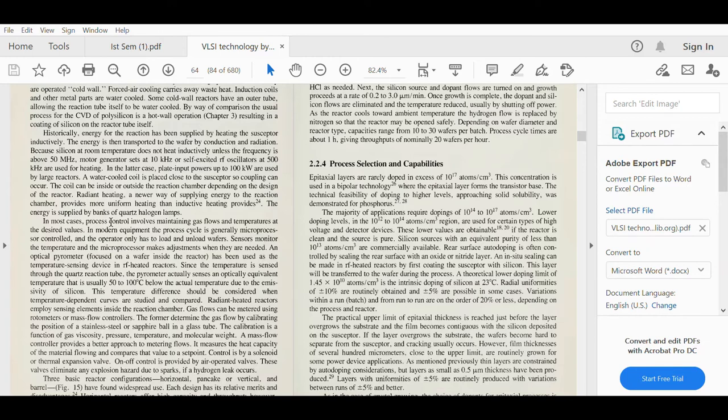In most cases, process control involves maintaining gas flows and temperature at desired values. In modern equipment, the process cycle is generally microprocessor controlled. A sensor-based control system is there. The important component in the process is the control system with sensor monitoring, microprocessor-based monitoring system. The operator only has to load and unload wafers. You do not have to worry about what is going inside because all things are automatic, controlled by the microprocessor-based system.